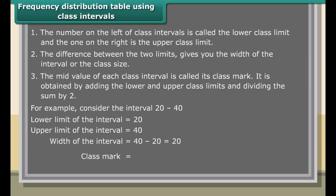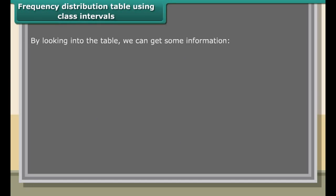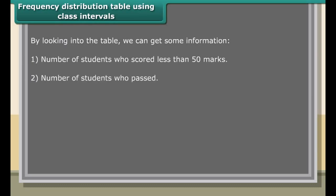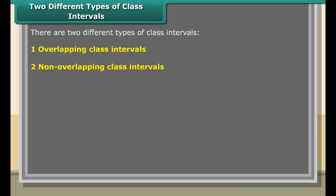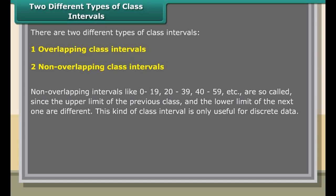The number on the left of class intervals is called the lower class limit and the one on the right is the upper class limit. The difference between the two limits gives you the width of the interval or the class size. The mid value of each class interval is called its class mark. It is obtained by adding the lower and upper class limits and dividing the sum by 2. For example, consider the interval: lower limit equals 20, upper limit equals 40, width equals 40 minus 20 which equals 20. Class mark equals 20 plus 40 upon 2 which equals 60 upon 2 which equals 30.